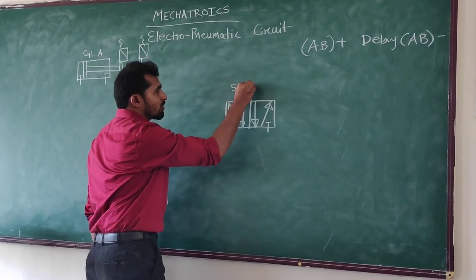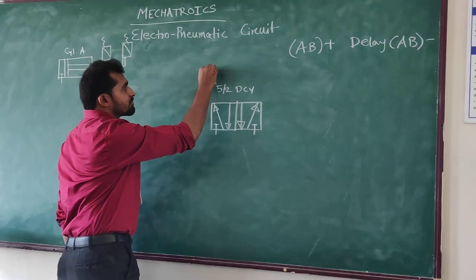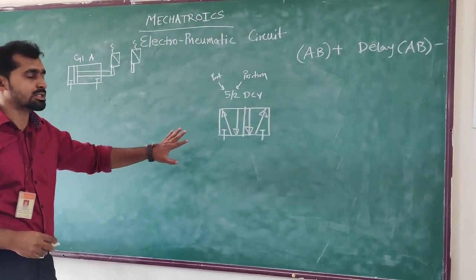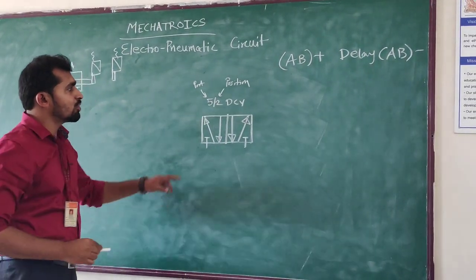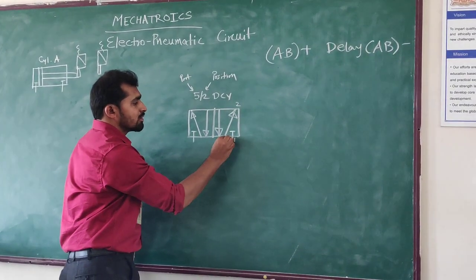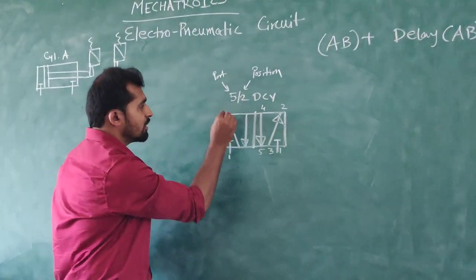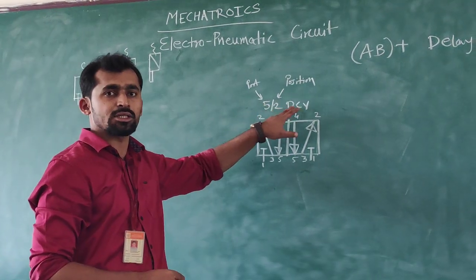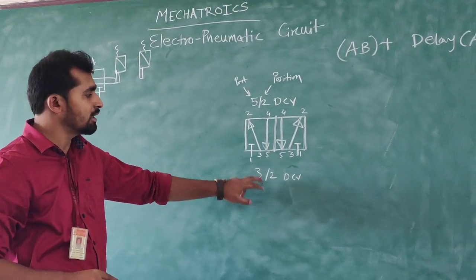The 5x2 directional control valve is also called a DCV. In 5x2, the 5 refers to ports and 2 refers to positions. So there are 5 ports and 2 positions. The first position and second position each contain 5 ports numbered 1, 2, 3, 4, and 5. That is why this valve is called a 5x2 directional control valve. If the question asks for a 3x2 DCV, then you draw the ISO symbol of a 3x2 directional control valve — 3 ports and 2 positions. For a double acting cylinder we use a 5x2 directional control valve.